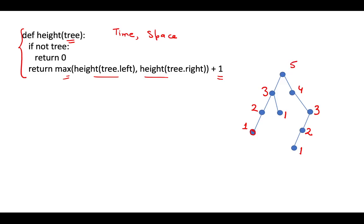So let us try to find the time complexity of this particular algorithm. We will find the time complexity in two ways: one, we will find it in a mathematical way by solving a recurrence relation, and the other in an intuitive fashion where we just make an argument and it will be very clear what the time complexity is. First, let us get to the mathematical way.